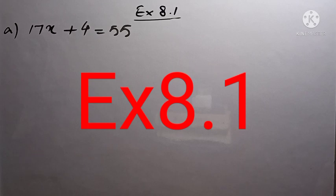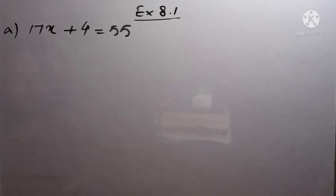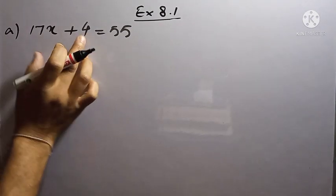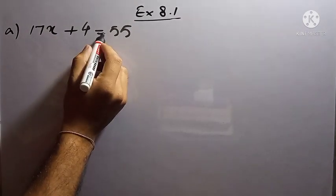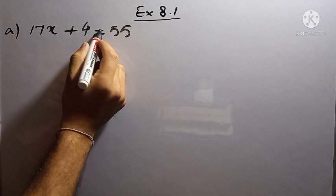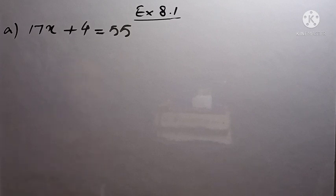Good morning students. Today we're going to start exercise 8.1 and we have the first question. I hope that you have watched the last two videos. The question is 17x plus 4 equal to 55. The part of the equation on the left hand side of the equality sign is the left hand side, and to the right of the equality sign is the right hand side. Don't forget: when any term goes from one side to another, it has to change its sign — plus to minus and minus to plus.